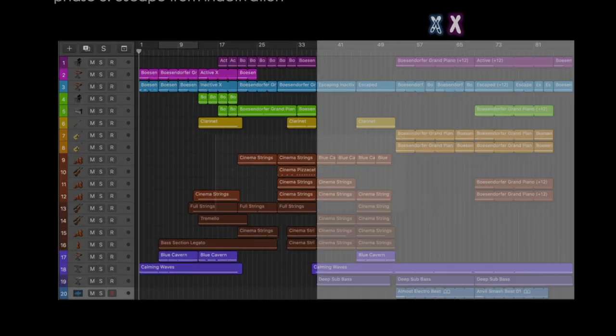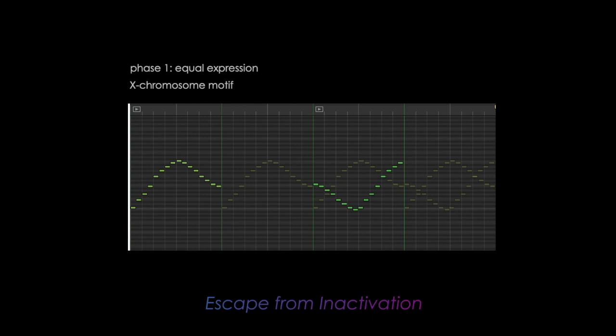Now, let's break down the music theory behind each phase. Phase 1 is equal expression from both chromosomes during development. Each note you see represents genes on the X chromosome. The gliding up and down the scale represents the spread of genes along the X chromosome. In the beginning, to symbolize equal expression, the X chromosome motif will be played by both chromosomes.